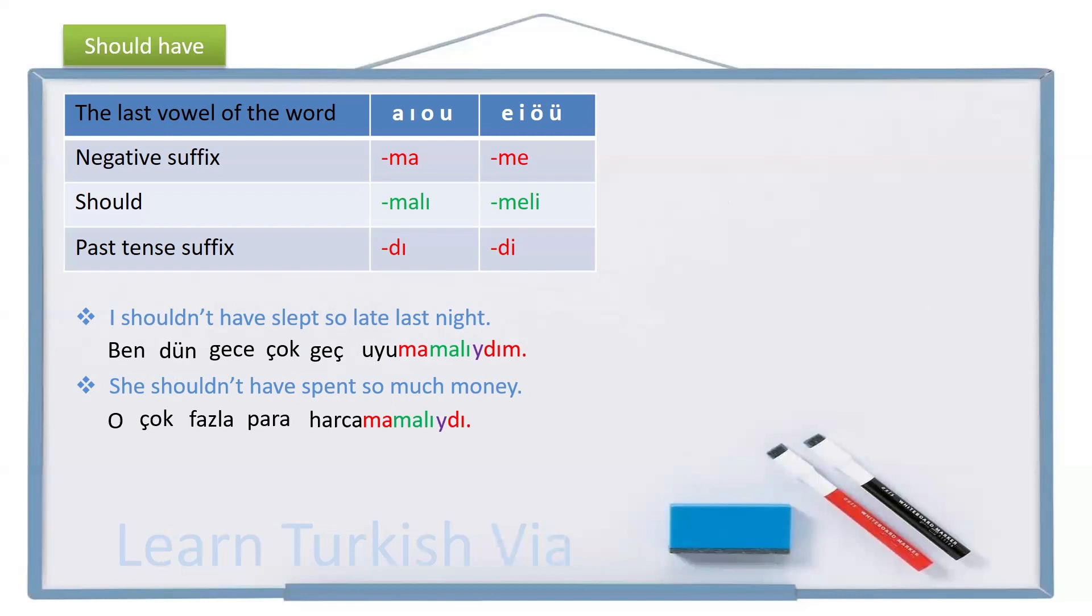And the last example. You shouldn't have lied to me, but you did, unfortunately. So, you, sen, to me, bana, lie, yalan söyle, not lie, yalan söyleme, should not lie, yalan söylememeli, shouldn't have lied, yalan söylememeliydi.